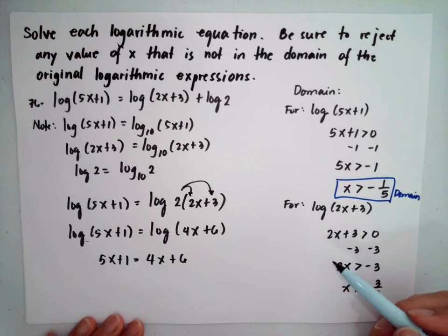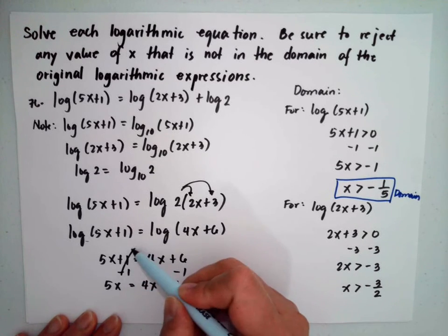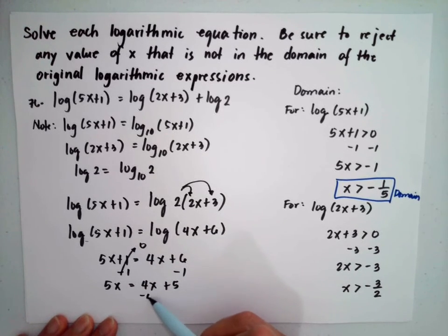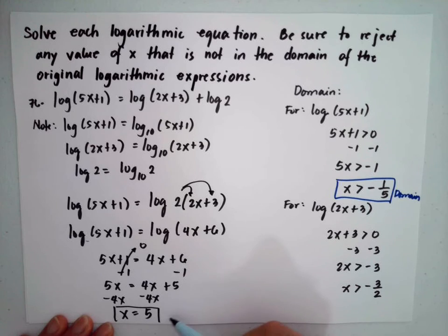Then we will collect like terms. Subtract 1 from both sides. So 5x is equal to 4x plus 5. Then subtract 4x from both sides. So we have x is equal to 5. This is our answer solution for this problem.